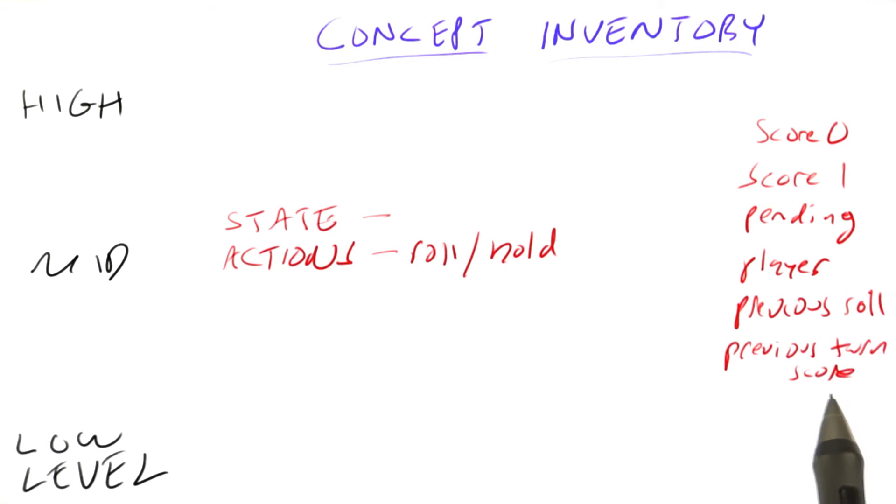The previous turn score, how much did the other player just make on their turn. All of these are possibilities.